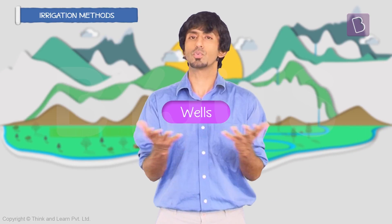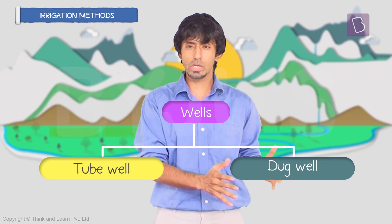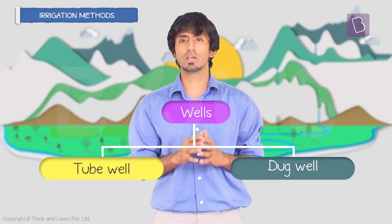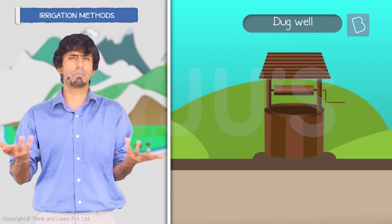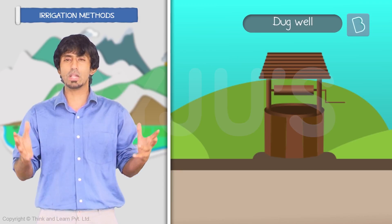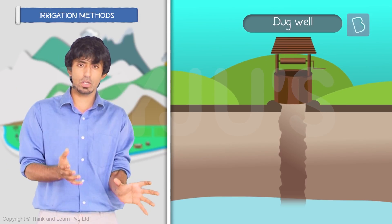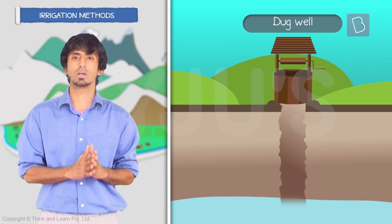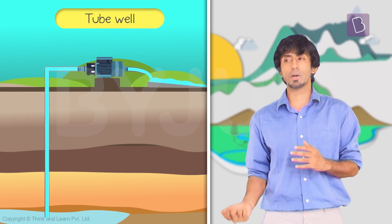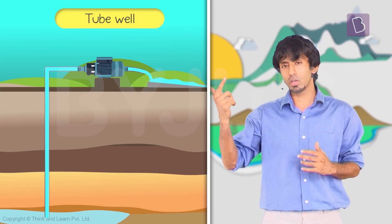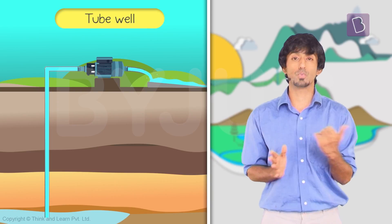Looking at wells, there are two types: dug wells and tube wells. A dug well is very popular and common — you dig it, get to the water table, and then start using that water. A tube well can reach deeper parts, and you use a pump to get the water out and use that to irrigate the fields.